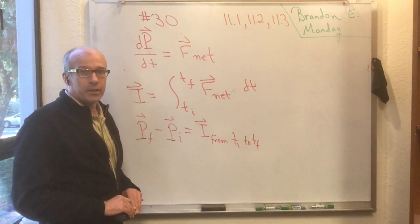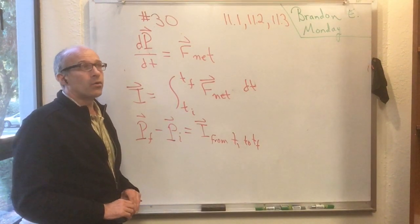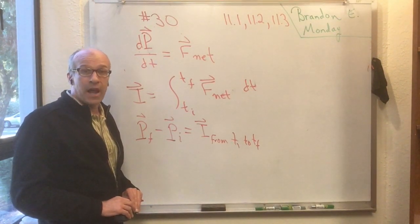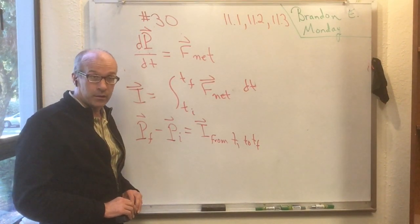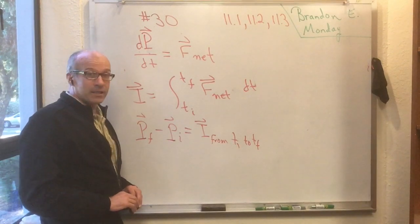So now I'm going to introduce the concepts from 11.3. In 11.3, Knight introduces two kinds of collisions. There's elastic collisions and inelastic collisions. In an elastic collision, the total kinetic energy of the particles after the collision is the same as it was before that collision. In an inelastic collision, the total kinetic energy of the particles after the collision is somewhat less.